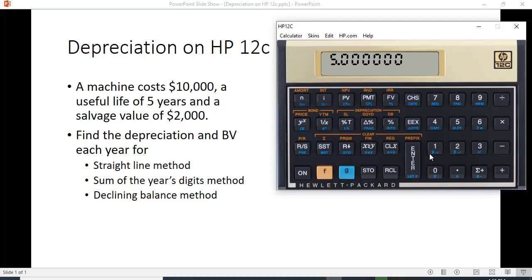When you want to find it, you have to tell it what year, because it not only tells you the depreciation, it tells you the book value. We're going to hit one, this function key, and above the percent T sign is SL. You can see it's $1,600.